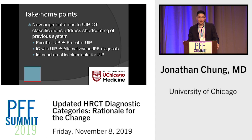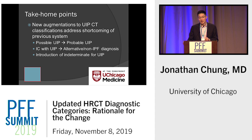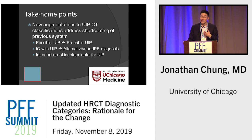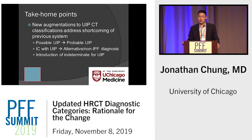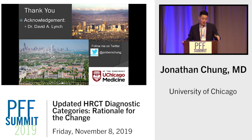To wrap up, the new classification system is an improvement for multiple reasons. Possible UIP is now called probable UIP because it better reflects the diagnostic ramifications of this imaging pattern. Inconsistent with UIP is now called the alternative non-IPF diagnostic category, getting away from the implication of not being UIP on pathology, since up to half of these cases will be UIP on pathology. And we now have the indeterminate for UIP category — one out of eight to ten cases come through where I have no idea what's going on, and now I don't have to feel bad about it. Thank you very much.